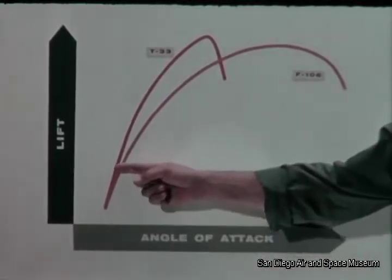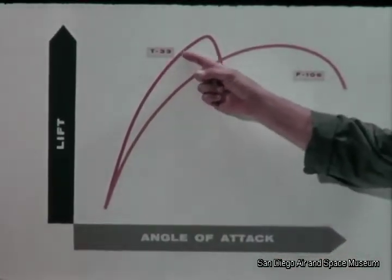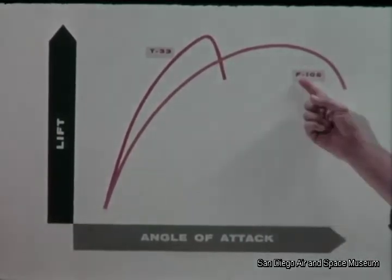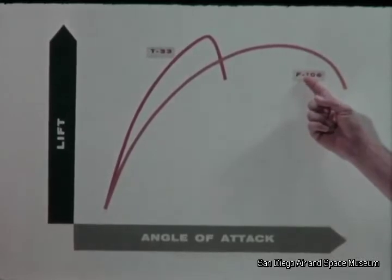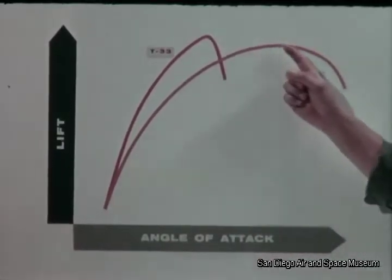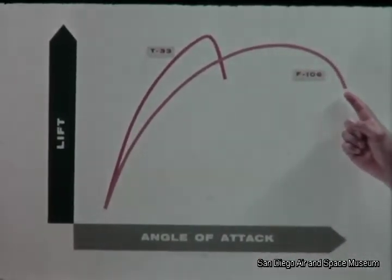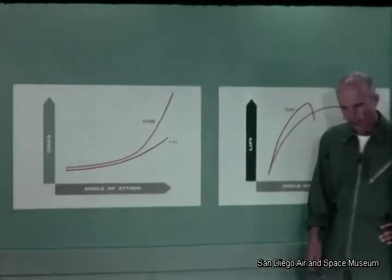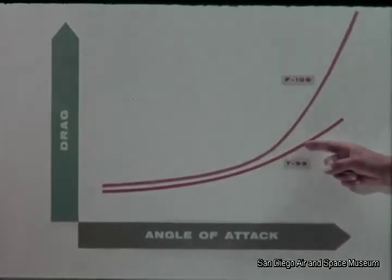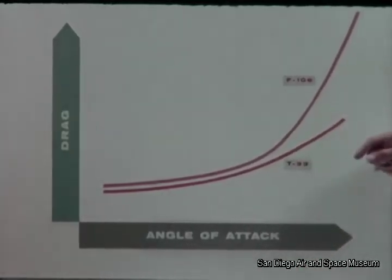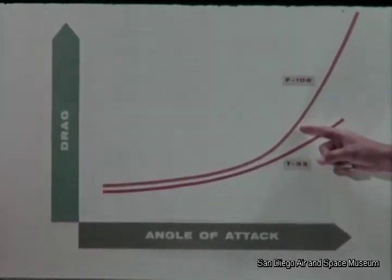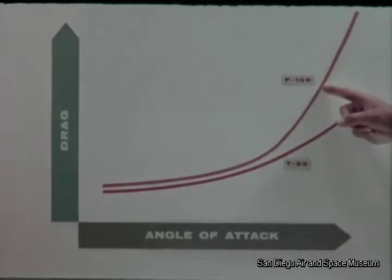The coefficient of lift increases proportionately until you reach the stall point, where it suddenly breaks and falls rapidly away. The F-106 characteristic is a bit different — initially about the same, but as alpha increases, the curve flattens and goes over the top gently without a sharp break. The drag characteristics of the T-33 increase more or less proportionately as we increase in angle of attack. However, in the F-106, at the higher angles of attack, the slope of the drag curve increases more rapidly than it does for a straight-wing airplane.